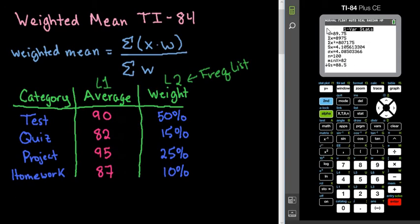The very top part right here, X-bar, is your average weight. So X-bar is our weighted average. So our weighted average would be 89.75,